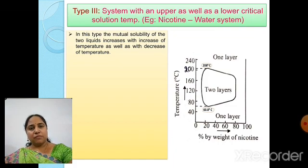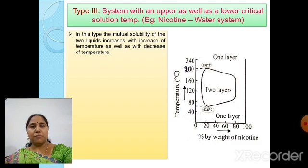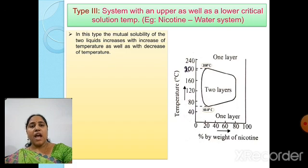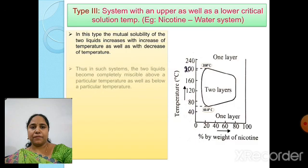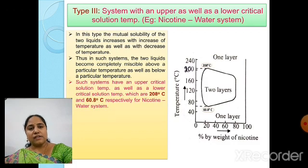Now let us discuss Type 3: system with an upper as well as a lower critical solution temperature. The example for this type is the nicotine-water system. In this type, the mutual solubility of the two liquids increases both with increase of temperature and with decrease of temperature. Thus the two liquids become completely miscible above a particular temperature as well as below a particular temperature. Such systems have an upper critical solution temperature of 208°C and a lower critical solution temperature of 60.8°C for the nicotine-water system.